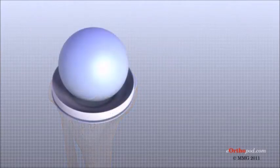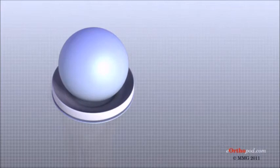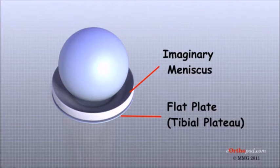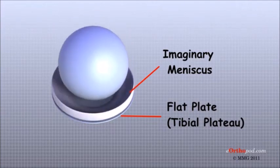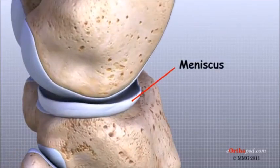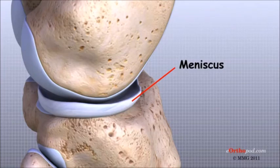Imagine the knee is a ball resting on a flat plate. The ball is the condyles of the femur and the plate is the tibial plateau. The menisci actually wrap around the round condyles to fill the space between them and the flat tibial plateau. The menisci act like a gasket, helping to distribute the weight from the femur to the tibia. Without the menisci, any weight on the femur will be concentrated to one point on the tibia. But with the menisci, weight is spread out across the tibial surface.